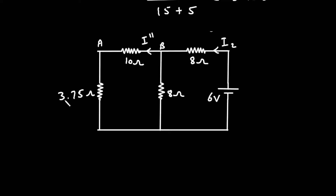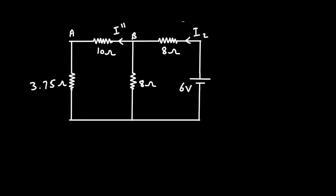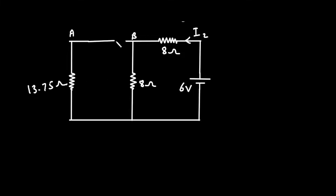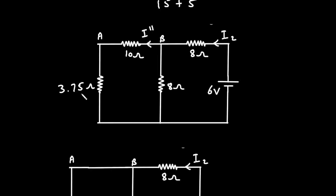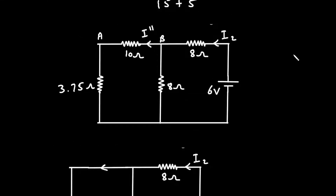Here we can see the 3.75Ω and the 10Ω are connected in series. We can replace these two resistances by a single resistance of 13.75Ω, because 10 + 3.75 = 13.75Ω. The current I double prime will remain the same through this branch.